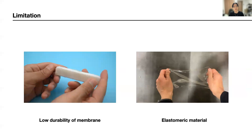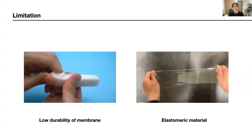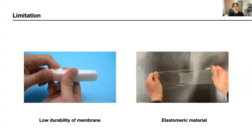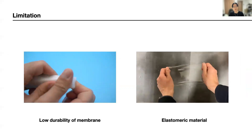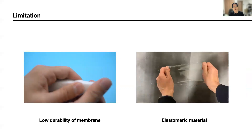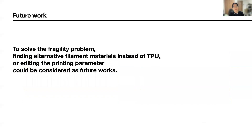On the other hand, the proposed method's limitation is the low durability of the membrane. After printing, when the compression peels off the beads, it is found that the membrane could be easily broken. To prevent this situation, we cover the outside of the device with a sheet of elastomeric material. As future work, we plan to maintain the durability of the membrane by looking for filament material that can be substituted for TPU and readjusting the printing parameters.